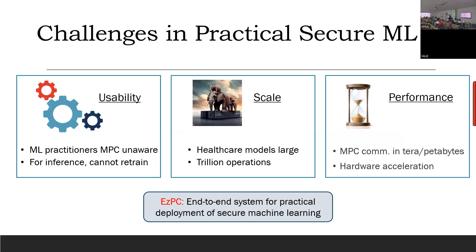There were several challenges in running something like this with secure ML. Number one was usability: you wanted to go from floating-point arithmetic — used by all ML libraries — to fixed point, which was more convenient and efficient for 2PC. We did not want to retrain any algorithm that had already been trained, since training is a laborious process. We were doing only inference and wanted to work with pre-trained models.